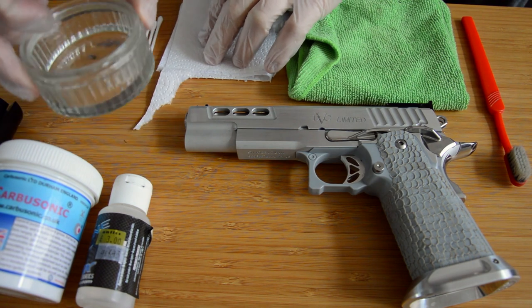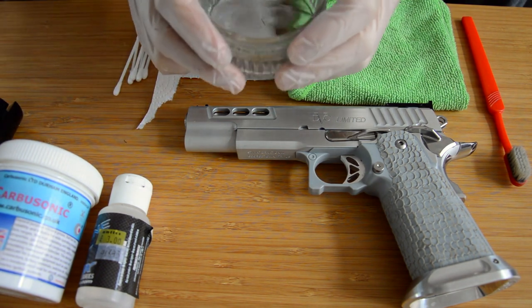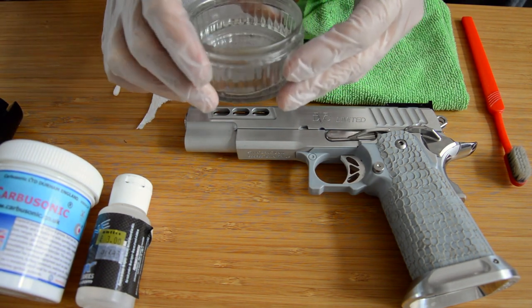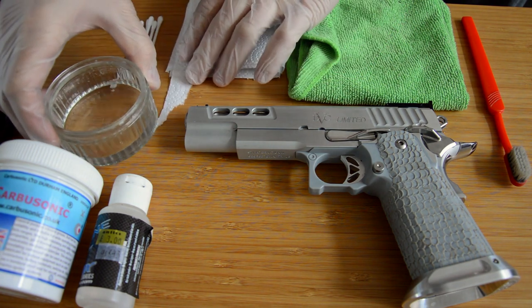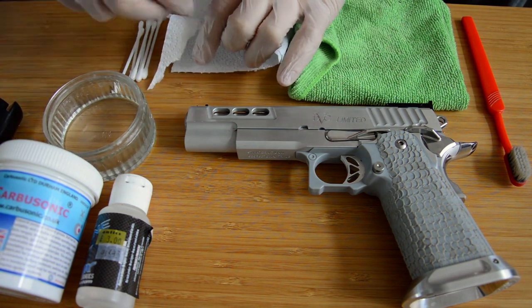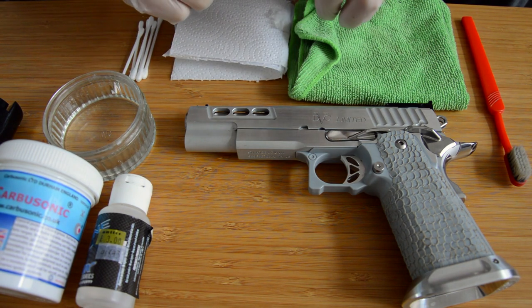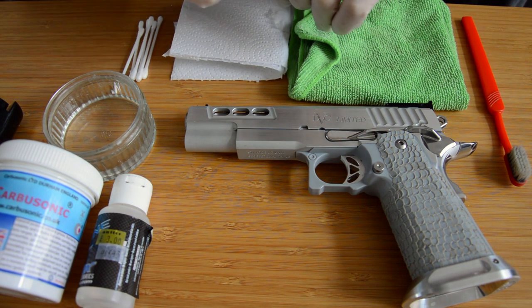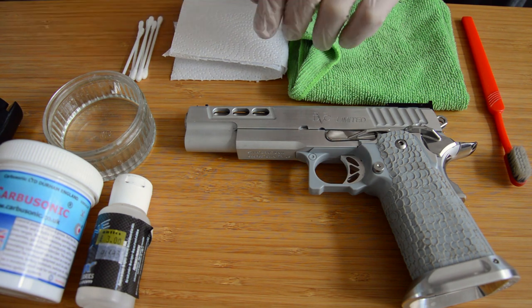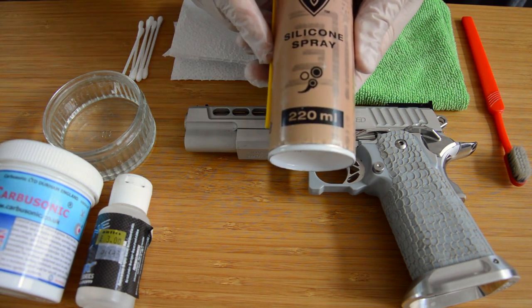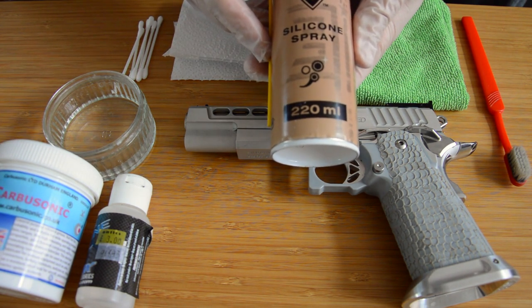You'll also need something to remove all the old grease and oil. I like to use isopropyl alcohol or otherwise known as isopropanol or rubbing alcohol. You can get this pretty cheap on Amazon in like gallon quantities. Really useful stuff. Failing that, you can just use standard airsoft silicone lubricant spray.